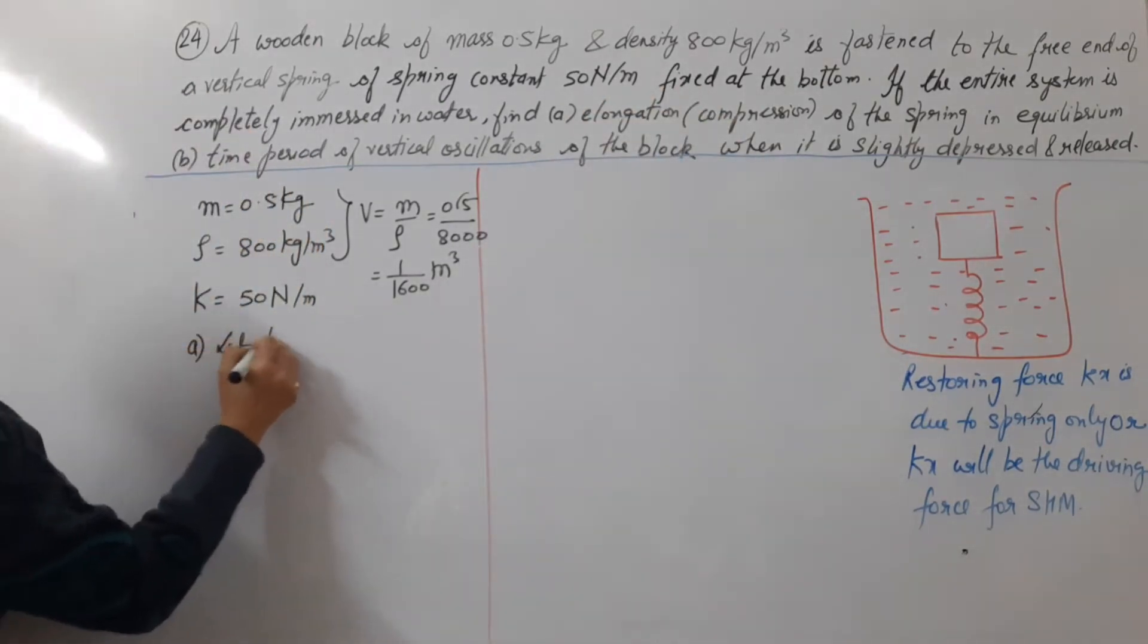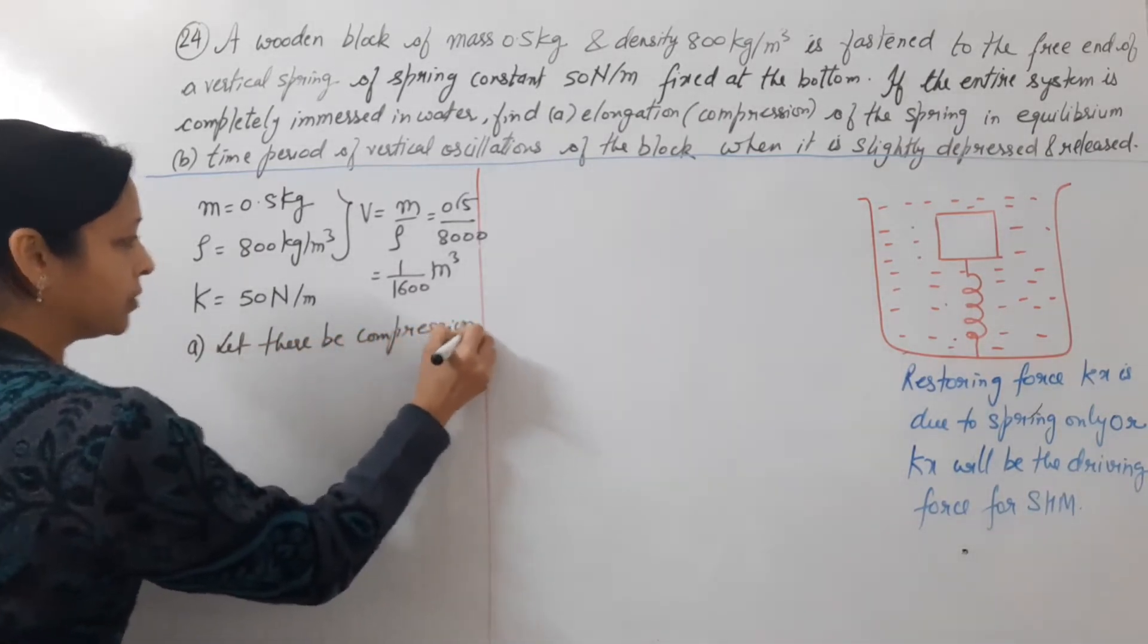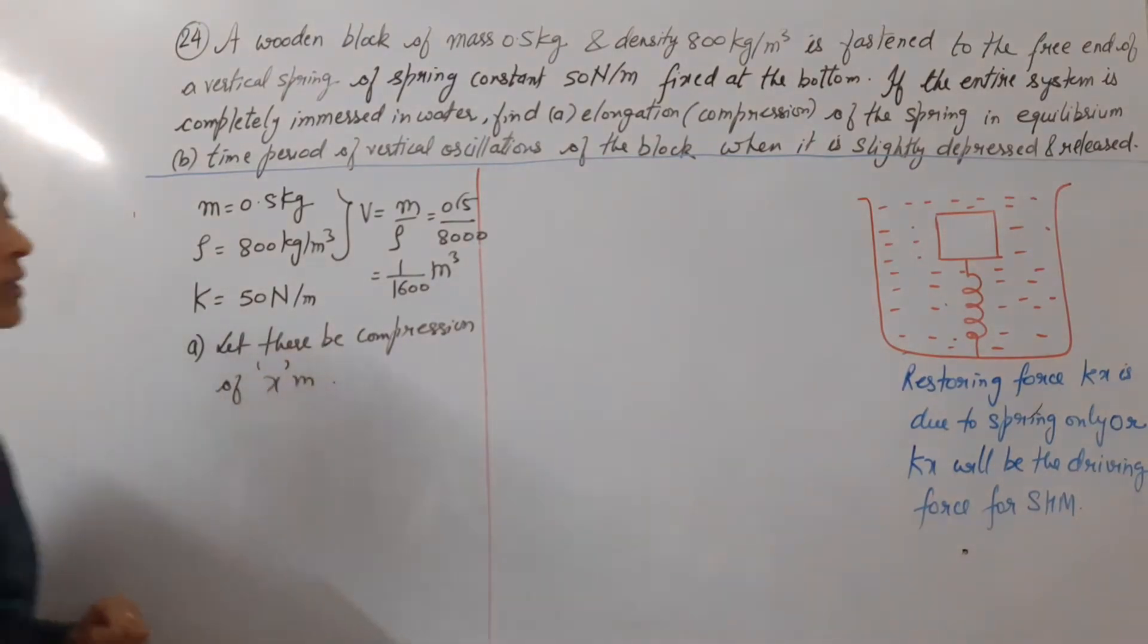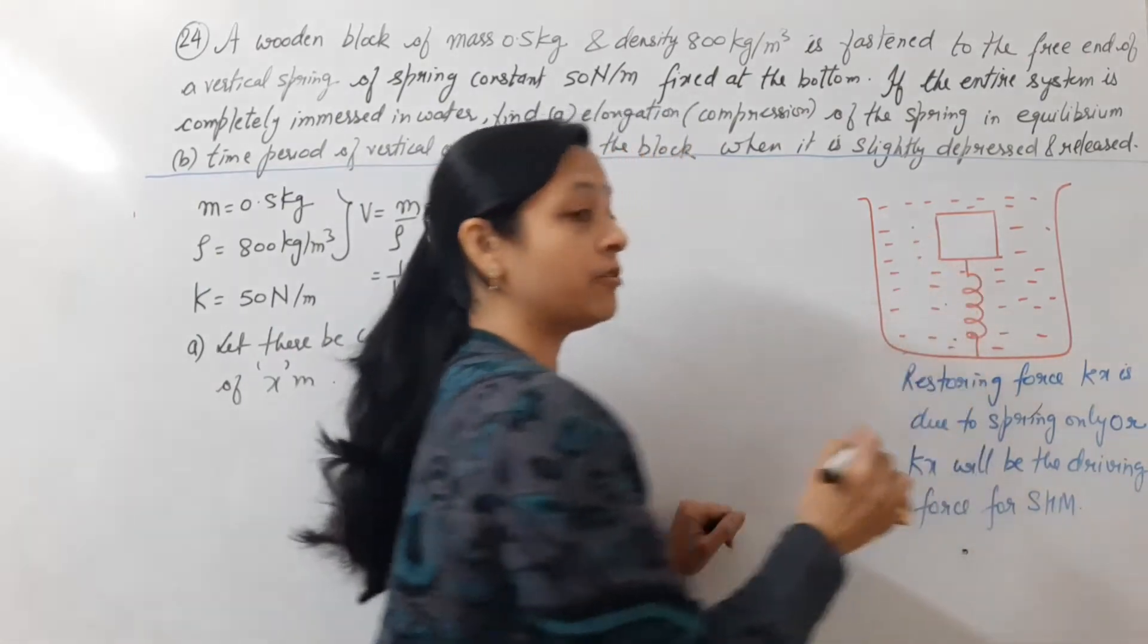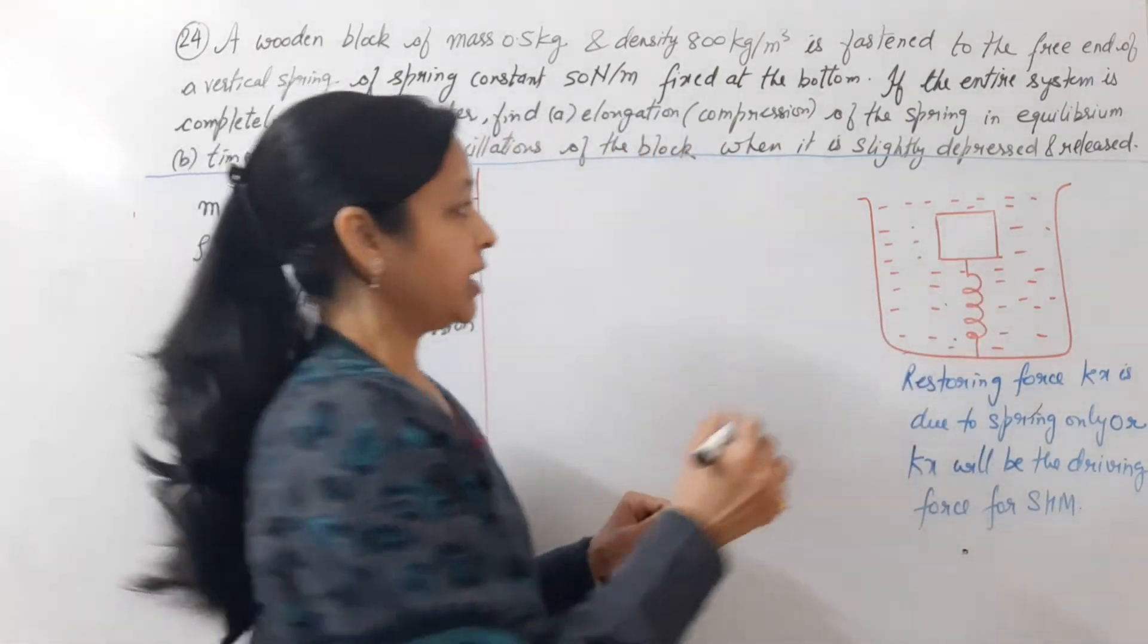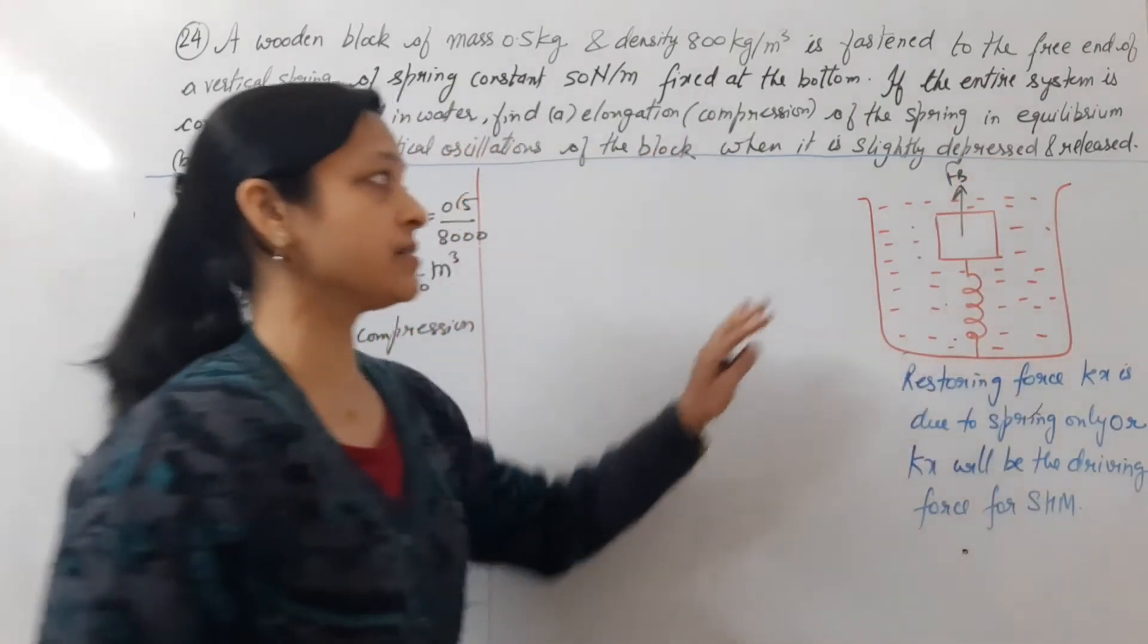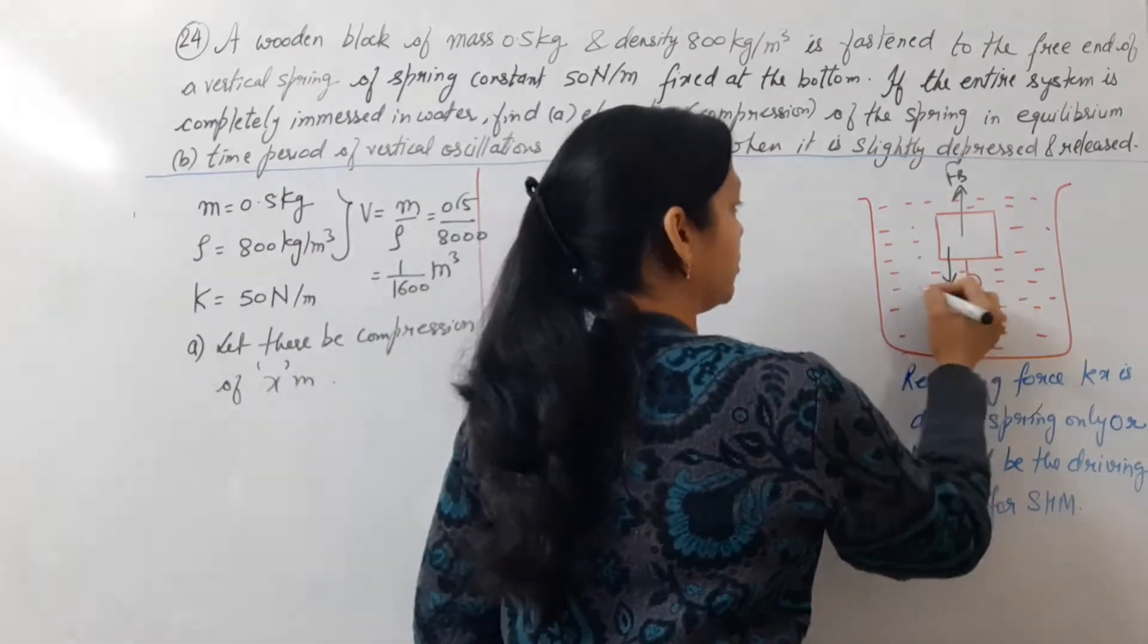Now we will assume the elongation or compression. Let there be compression of x meter. Now let's see, if we have completely immersed it, then what is the force? One is the buoyant force FB acting upwards, because it is immersed in water.